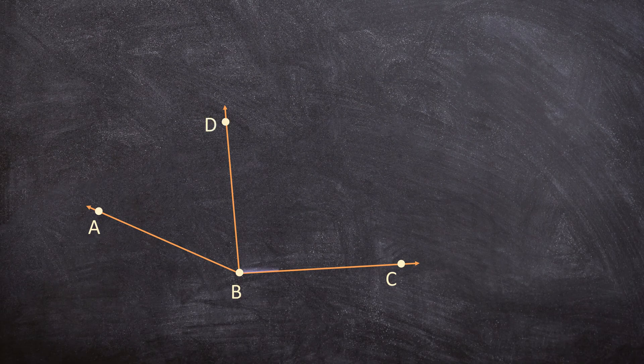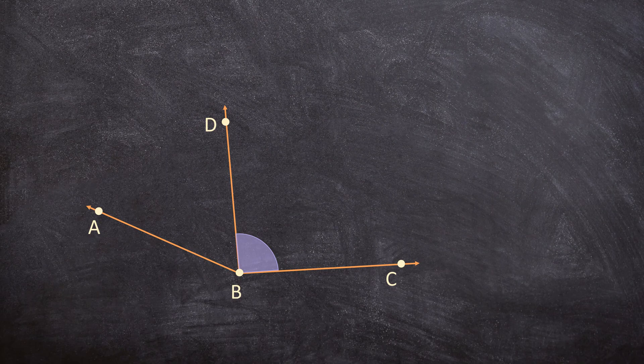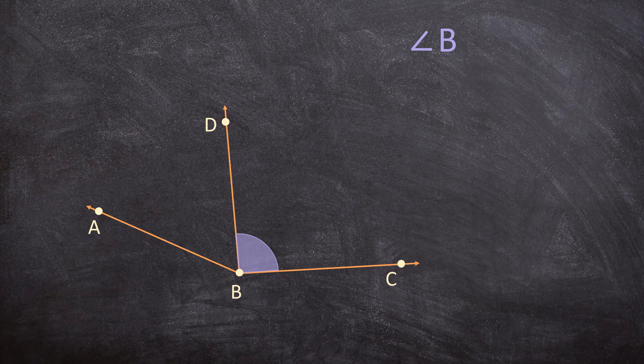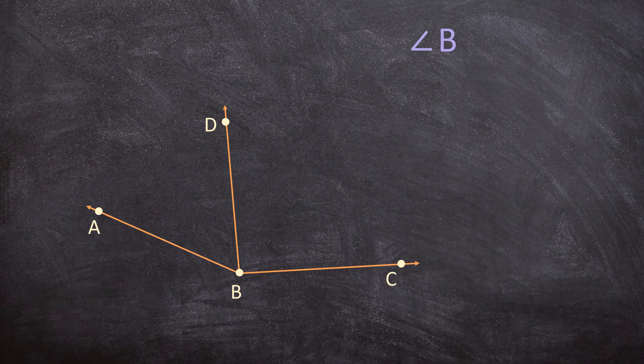And if I asked you to give the name of this angle you can't only tell me angle B because that can mean three different things. Because B has three different angles.